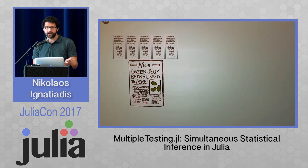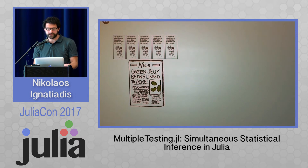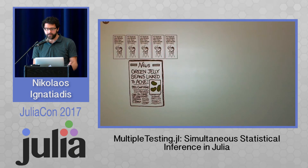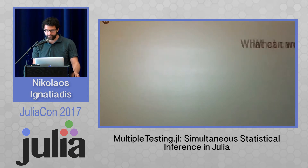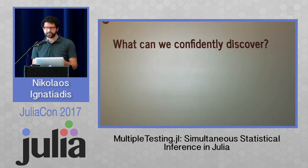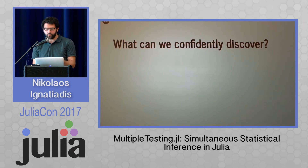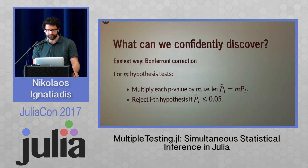Of course, based on the histogram I showed before, we knew this would happen. Some p-value would eventually, just by chance with nothing going on, be smaller than 0.05. So that's the main question multiple testing asks: how can we confidently discover something despite this multiplicity?